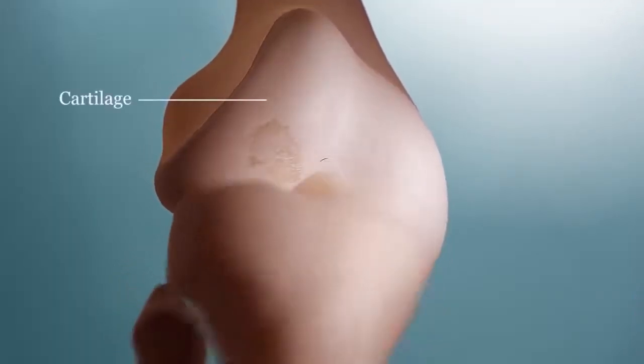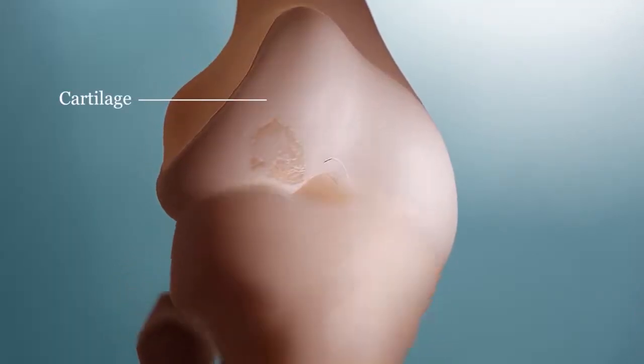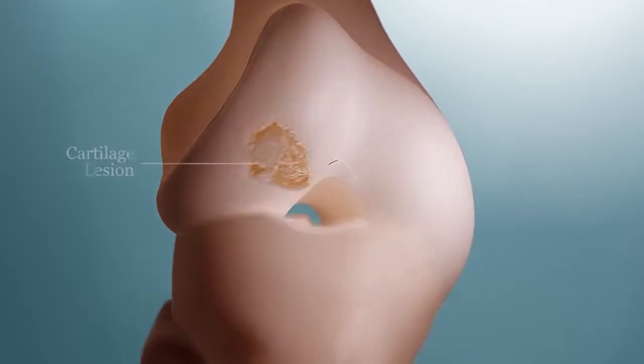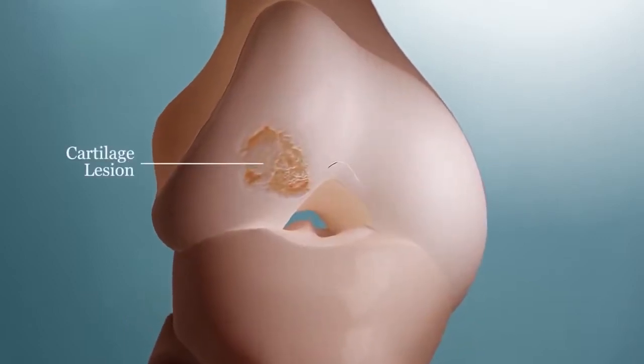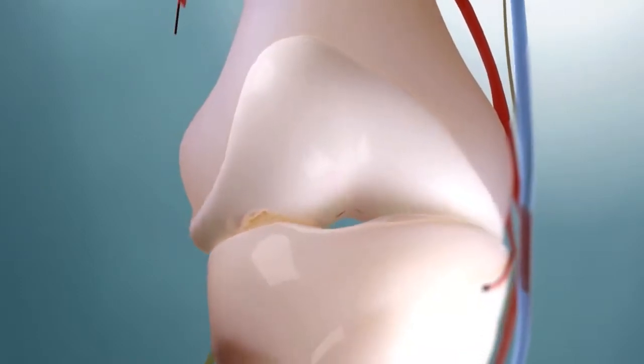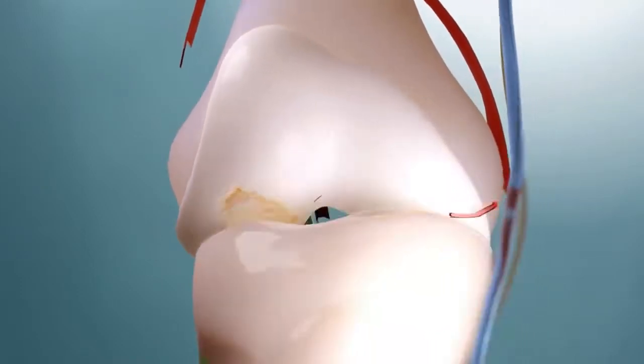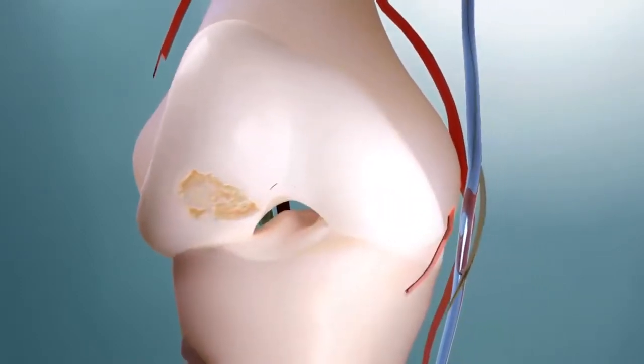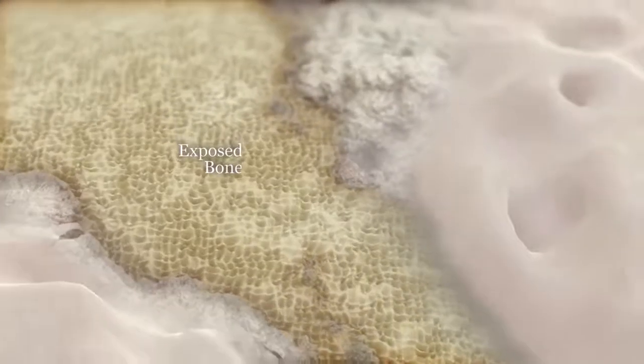Sports-related injuries and trauma or long-term wear can create lesions and degeneration in hyaline cartilage. Cartilage has a limited ability to repair itself, which can cause progressively debilitating pain and negatively impact quality of life. When healthy cartilage is damaged, it's graded on the ICRS scale from mild soft spots to deep lesions exposing underlying bone.